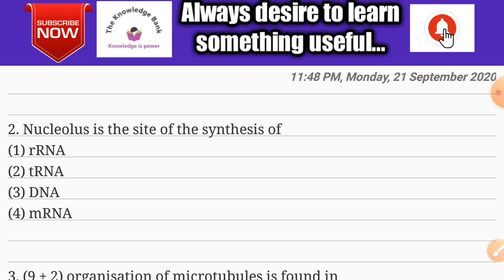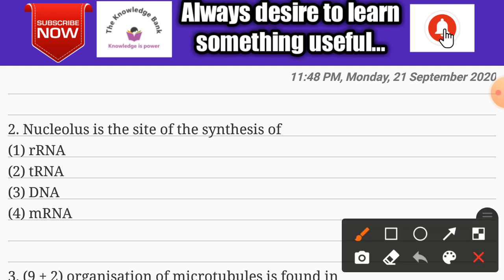Question number two: nucleus is the site of synthesis of — options are rRNA, tRNA, DNA, and mRNA. The correct answer is option one: rRNA.